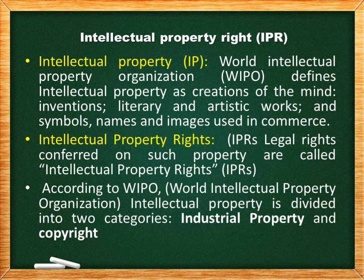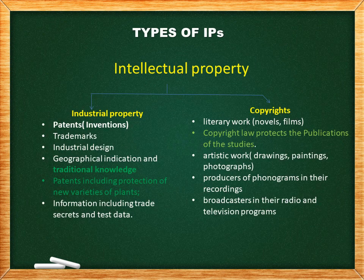Intellectual property includes patents for inventions, trademarks, industrial design, geographical indication, traditional knowledge, and protection of new plant varieties, trade secrets, and test data. Copyrights include literary works, novels, films, drawings, paintings, photographs, phonograms, and broadcasters' radio and television programs. The most well-known types are copyrights, patents, trademarks, and trade secrets.